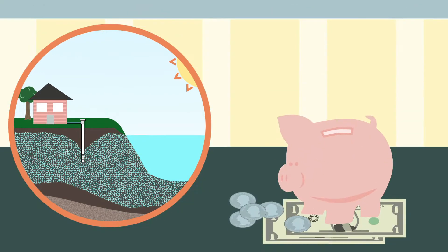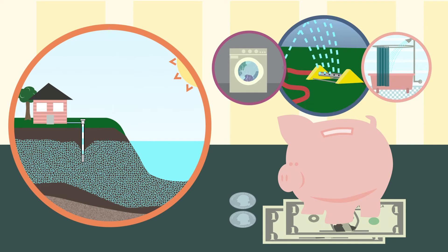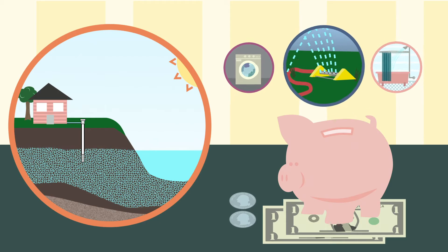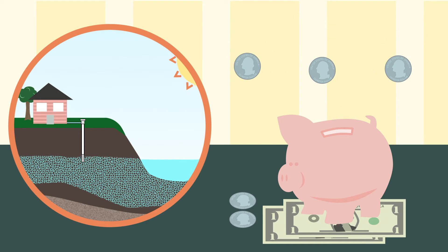Groundwater works a lot like a bank account. We spend water every day on things like laundry, bathing, and irrigation. Cutting back on wasteful water spending is one of the best ways to maintain a healthy groundwater account. But we still need to make deposits to keep our groundwater account from going to zero.